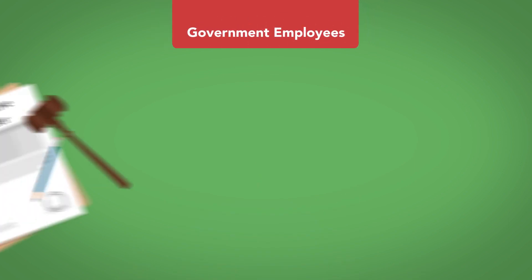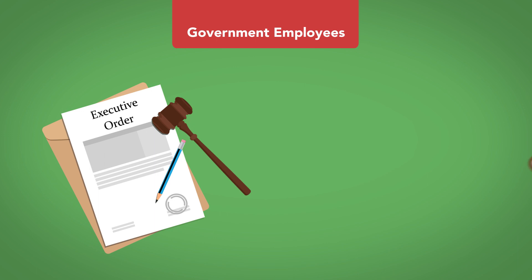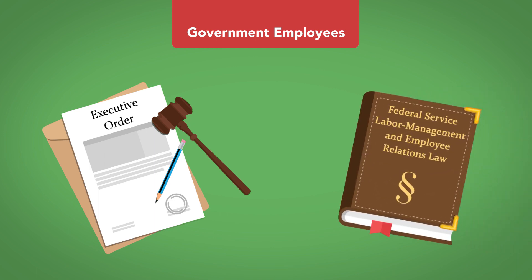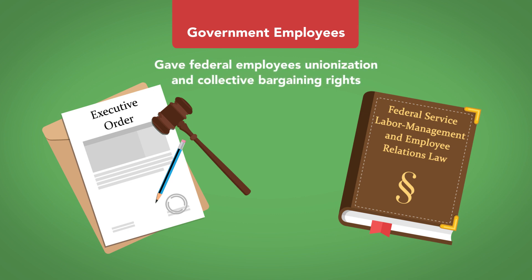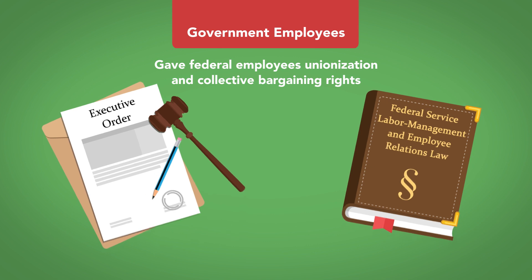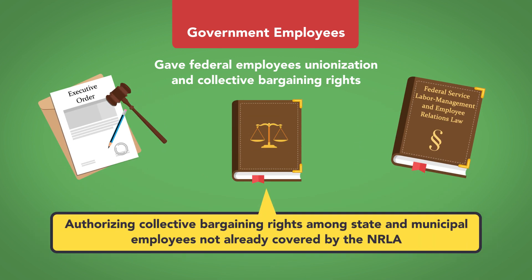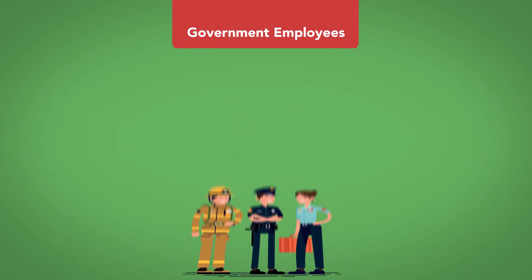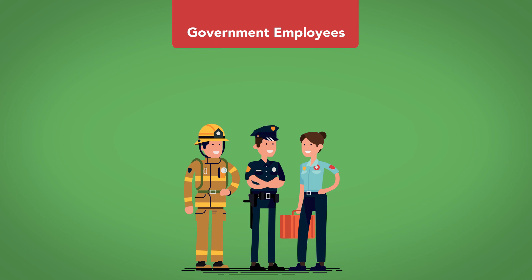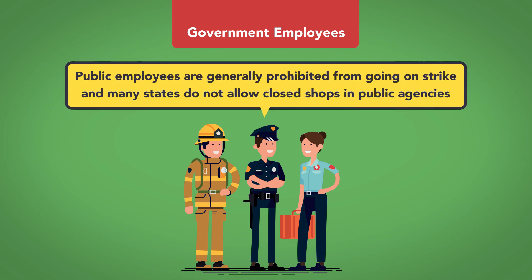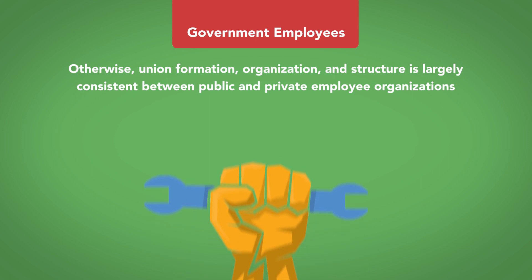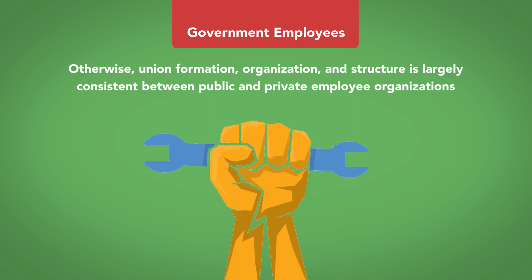Government Employees. An executive order signed by President John F. Kennedy in 1962, and later a 1978 federal statute called the Federal Service Labor Management and Employee Relations Law, gave federal employees unionization and collective bargaining rights. Several states have also passed laws authorizing collective bargaining rights among state and municipal employees not already covered by the NLRA. Still, public employees do not have the same breadth of rights afforded to private employees. Public employees are generally prohibited from going on strike, and many states do not allow closed shops in public agencies. Otherwise, union formation, organization, and structure is largely consistent between public and private employee organizations.